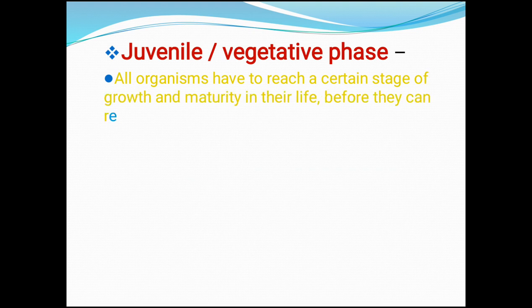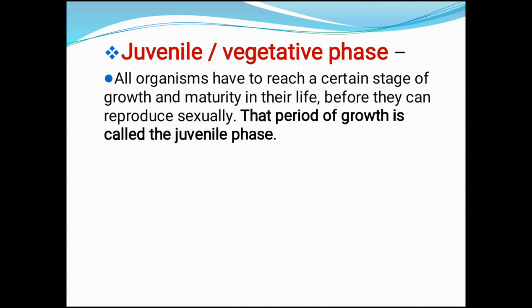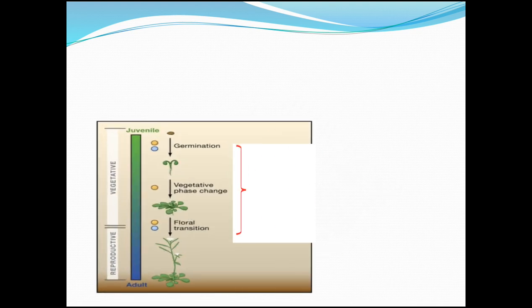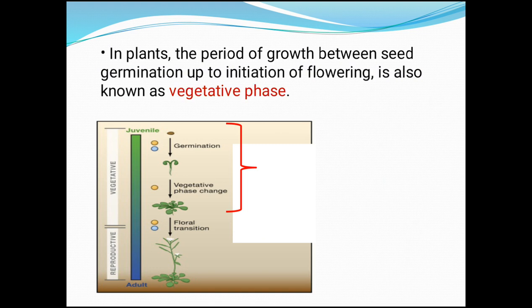All organisms have to reach a certain stage of growth and maturity in their life before they can reproduce sexually. That period of growth is called the juvenile phase, or it can be called as vegetative phase in case of plants. In animals, the period of growth from birth up to reproductive maturity is the juvenile phase. In case of plants, the period of growth between seed germination up to initiation of flowering is the juvenile phase or vegetative phase.